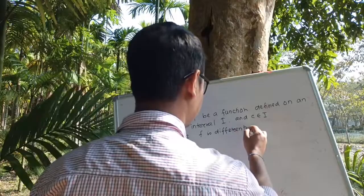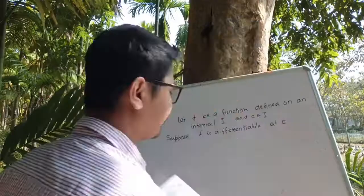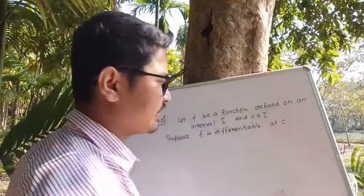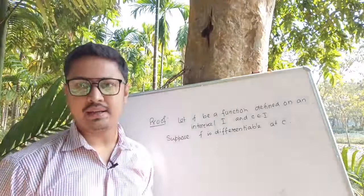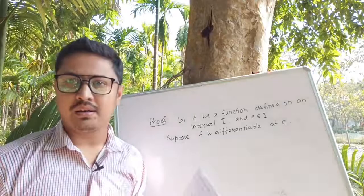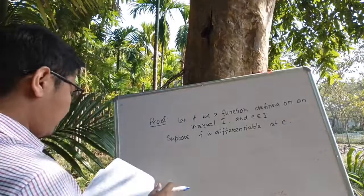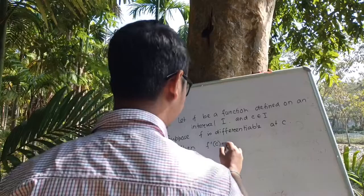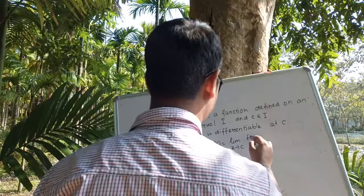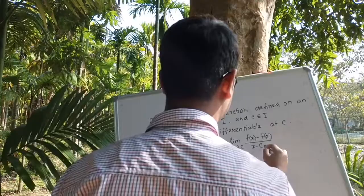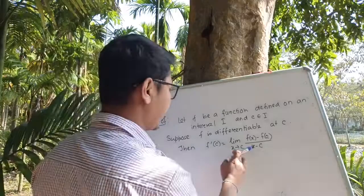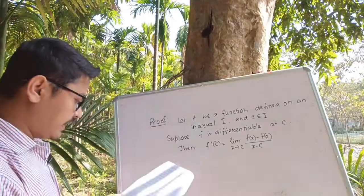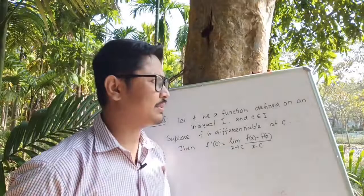Suppose f is differentiable at c — that means the differentiation of the function f exists at that arbitrary point on the interval. Since this function is differentiable, according to the differentiability formula, f'(c) equals the limit as x tends to c of [f(x) minus f(c)] divided by (x minus c). Since the differentiation exists at c, we have f'(c) equal to that limit.